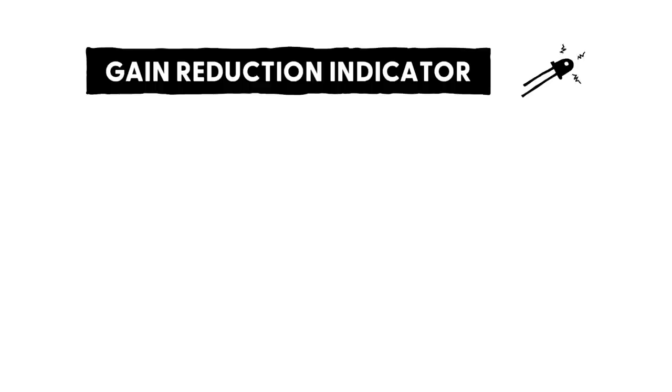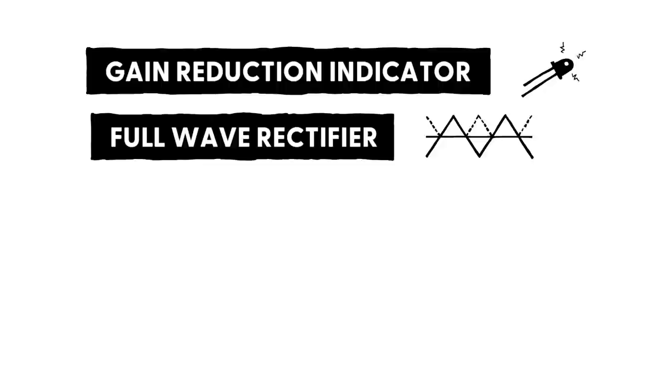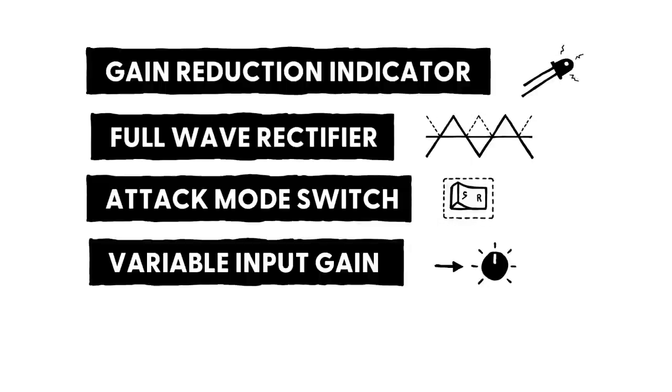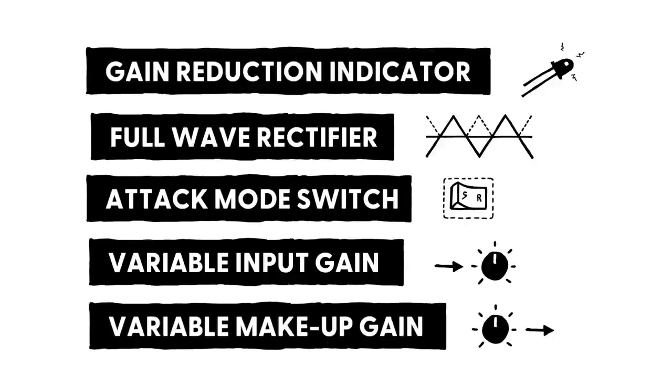After sorting through everything, I ended up with this list of extra features. A gain reduction indicator that tells us whenever the compressor is active. A full-wave rectifier that makes our peak detector more accurate. A switch that allows us to toggle between regular and snappy attack modes. A variable input gain stage that allows us to compress line-level signals. And finally, a make-up gain stage to boost the output volume. Thankfully, none of these are particularly hard to implement. So, let's start at the top and work our way down the list.